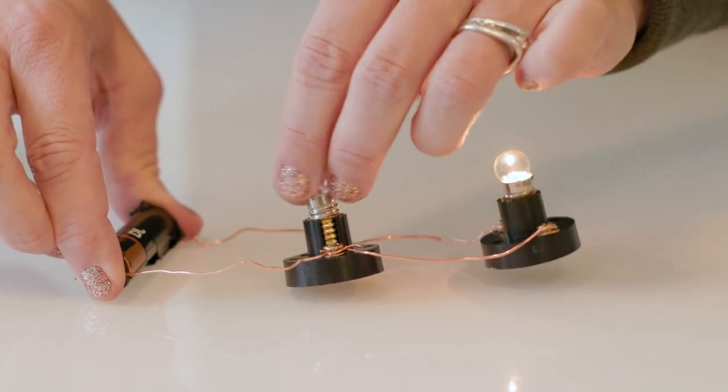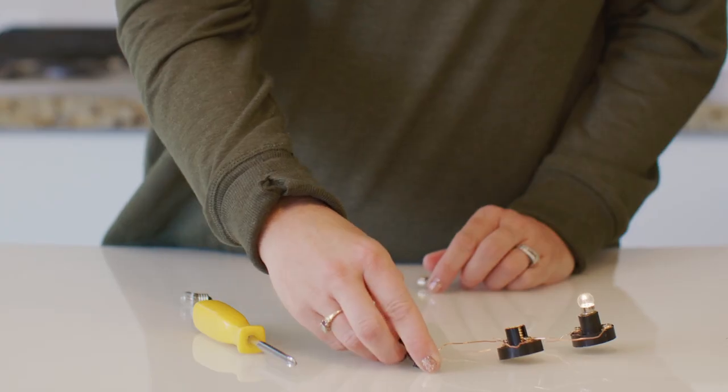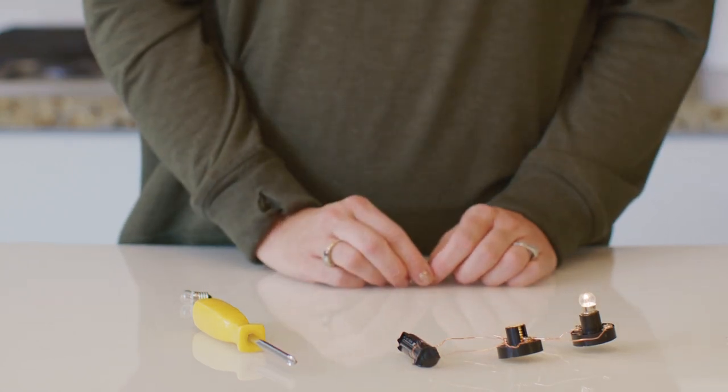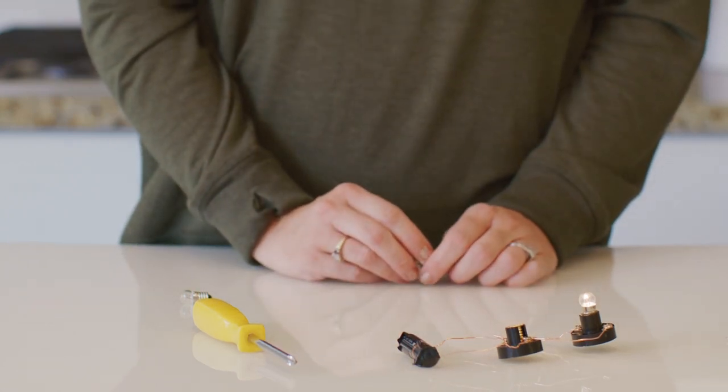Were your predictions correct? The other light bulb still has energy, because in a parallel circuit, the bulbs receive individual power without running in one continuous line.